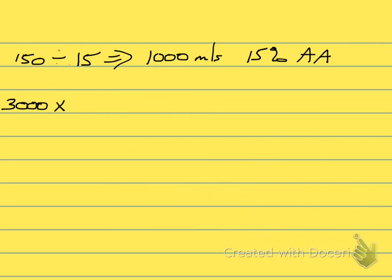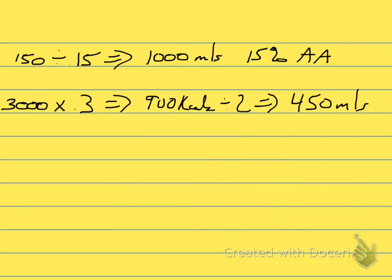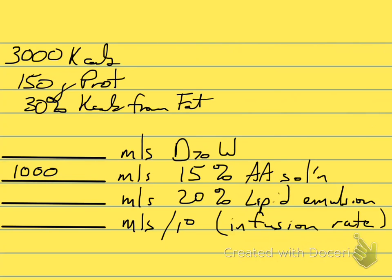So I'm going to multiply 3,000 by 0.30, which gives me 900 calories coming from fat. We're going to use a 20% lipid solution, which provides 2 calories per mL. So if I take 900 calories and divide by 2 calories per mL, I end up with 450 mL of 20% lipid, and I'll put that in the prescription.